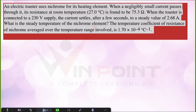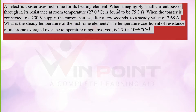When you are getting a question, first you need to read the question and understand what's been asked. The first step is writing the given values. An electric toaster uses nichrome for its heating element. When a negligibly small current passes through it, its resistance at room temperature is found to be 75.3 ohms. Room temperature is given as 27.0 degrees Celsius.